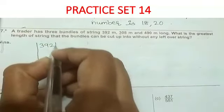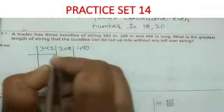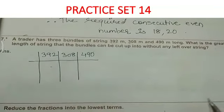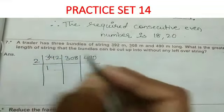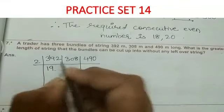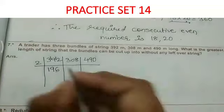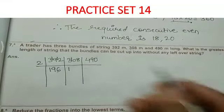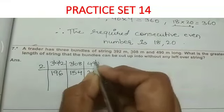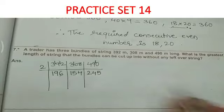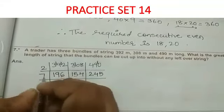The three numbers are 392, 308, and 490. All three are divisible by 2: we get 196, 154, and 245. Next, 196, 154, and 245 are all divisible by 7: dividing gives 28, 22, and 35.